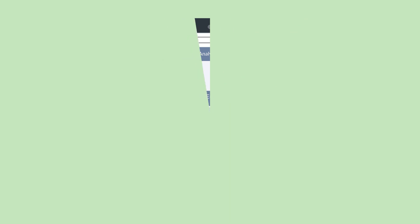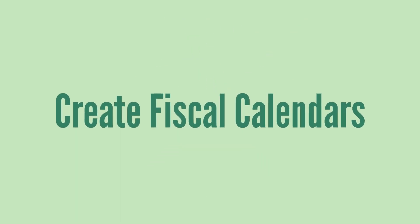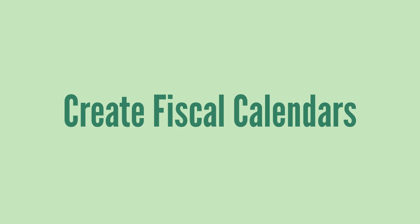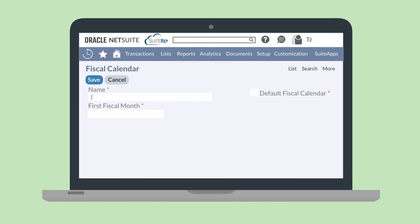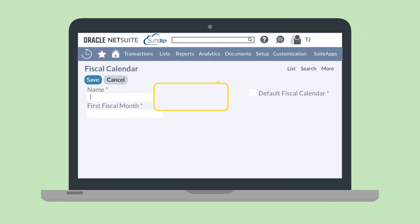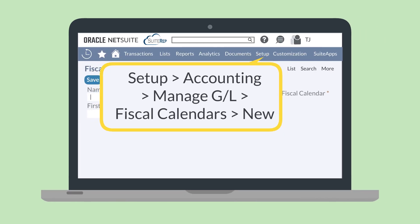First, you'll need to create the fiscal calendars you plan to use for your subsidiaries. Remember that you can use one fiscal calendar for multiple subsidiaries. To create a fiscal calendar, navigate to Setup, Accounting, Manage GL, Fiscal Calendars, New.